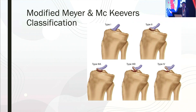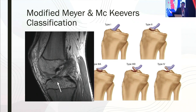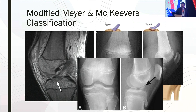The classification commonly used for these injuries is the Meyers and McKeever classification, which divides it into four types. Type 1 is an undisplaced fracture. Type 2 is a fracture in which there is posterior contact but from the anterior side the fragment is lifted. Type 3 are displaced fractures, and type 4 are comminuted fractures.